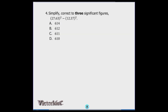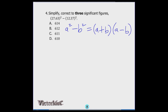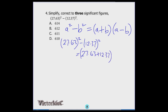Number four is on numerical processes using the difference of two squares. We apply the concept: a² − b² = (a + b)(a − b). So 27.63² − 12.37² becomes (27.63 + 12.37)(27.63 − 12.37).